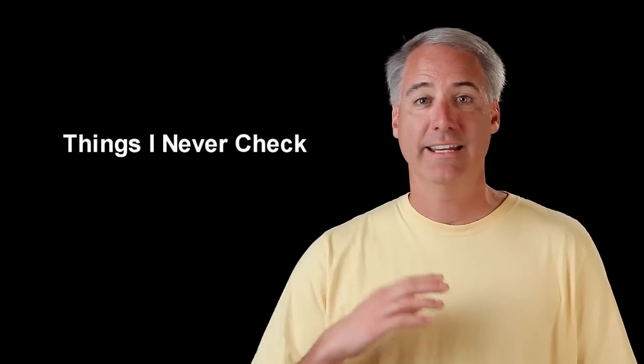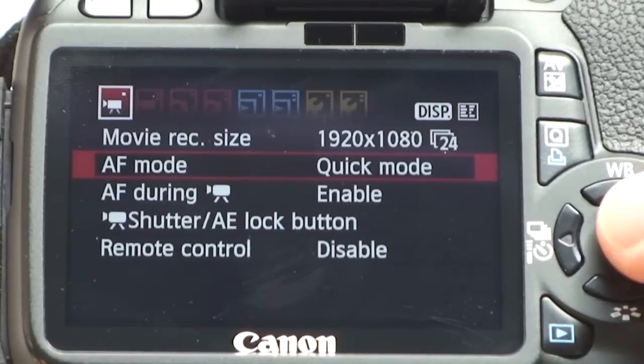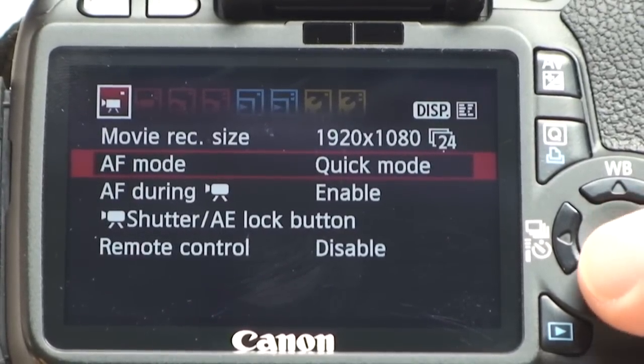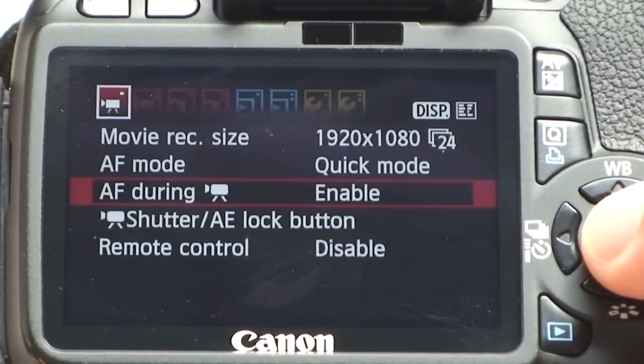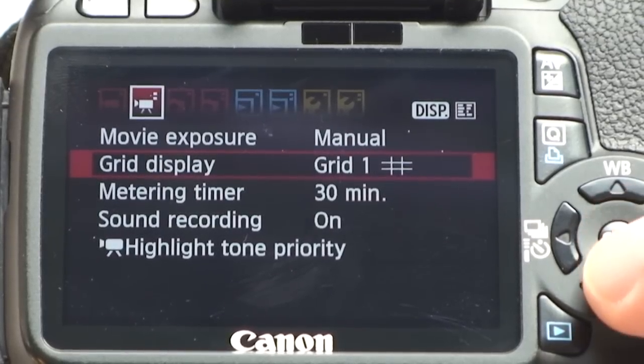Okay, now there's some things that I never check. I set in the menu and I never have to check them again. I'll run through those now. The first one is autofocus or AF mode. I select that to quick focus. The autofocus AF during movie, I enable that. The movie exposure, I set that to manual.